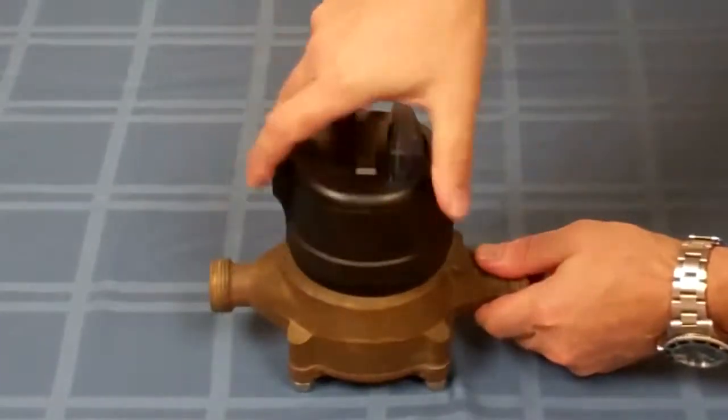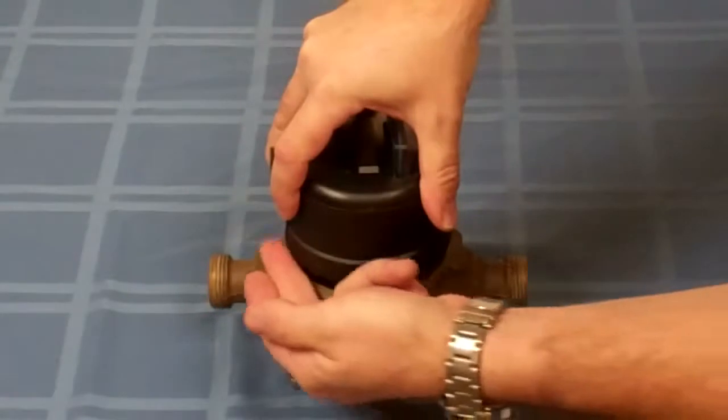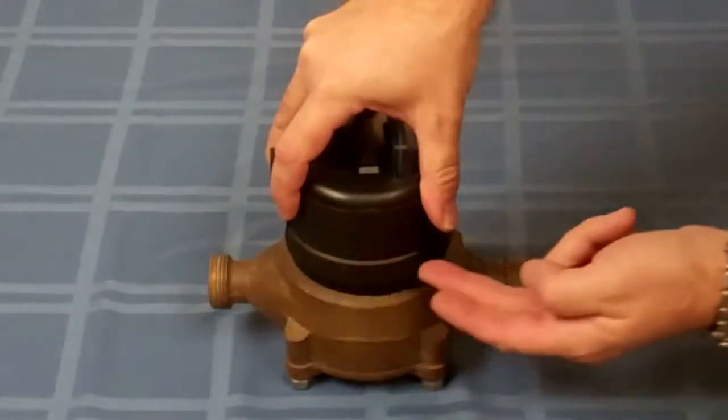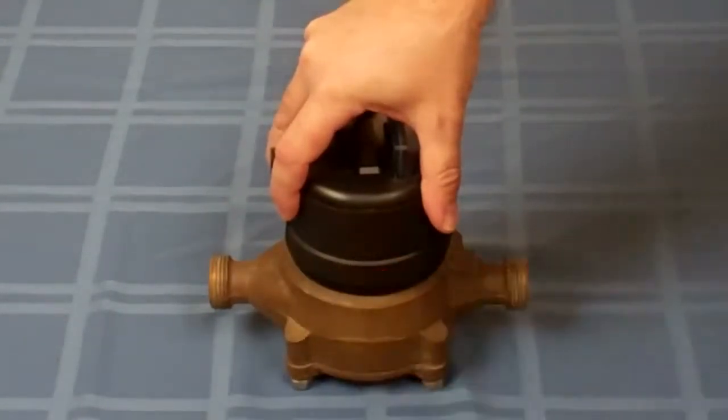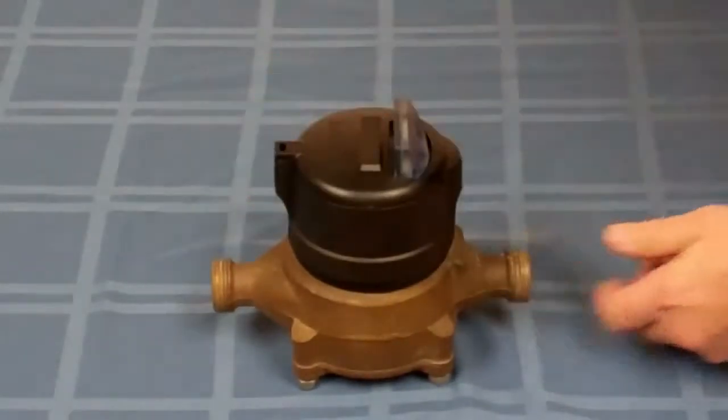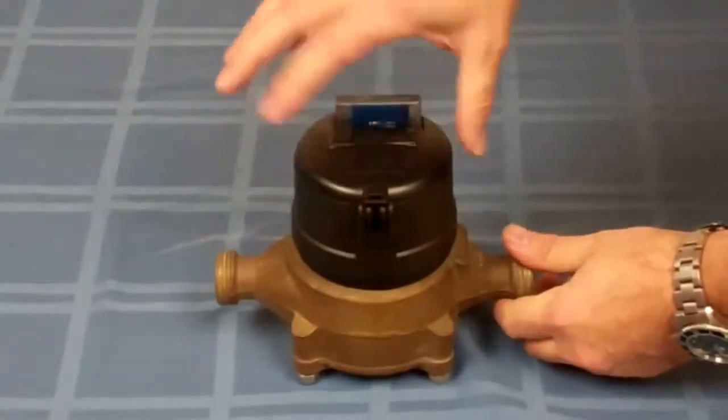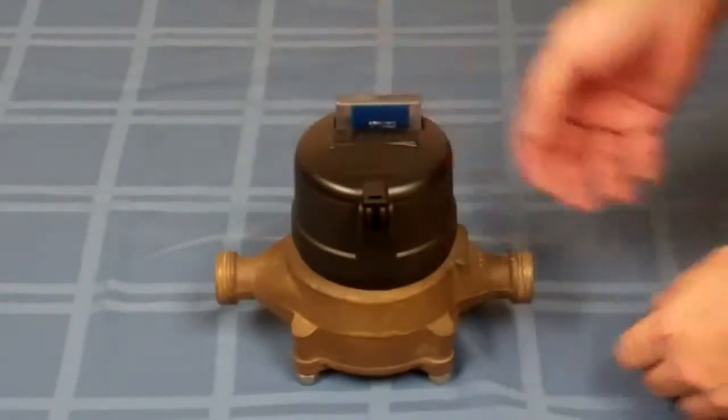You'll notice as you turn the register around, you'll want to make sure that there is no gap here between the half ring adapters and the register body. And there isn't, so we've got it snapped on there good.